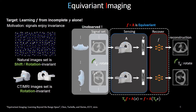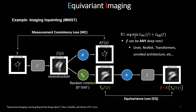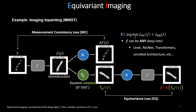To avoid this, an equivariant imaging framework was proposed to directly learn a neural network from y alone. The motivation of EI is very simple: we know that the signal set usually enjoys specific invariants. For example, the natural images set is shift or rotation invariant, while CT or MR images set is rotation invariant. Under this prior, we find the imaging system is equivariant, which can be used to learn f without ground truth. EI learns f by minimizing the sum of measurement consistency and the error from the equivariance constraint. After some training epochs, EI can learn the function f, which can be used to reconstruct new test measurement data.